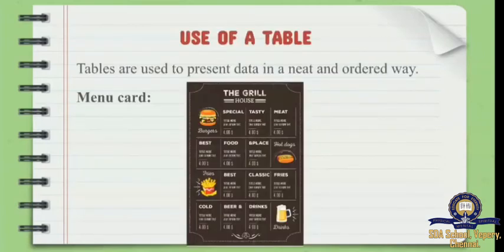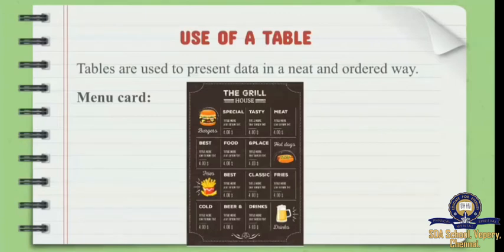I have given another example of a menu card. When you go to a hotel, they give you a menu card so that you can order your dish — they also use a tabular column. In the first row they have burger, special, tasty meat, and in the first column they have burger, best food, fries, and cold. We use a tabular column so that the data is very neat, in an orderly way, and easy to understand.